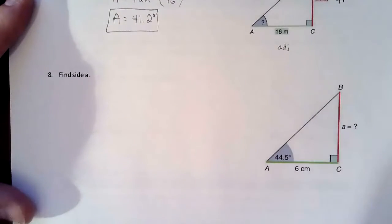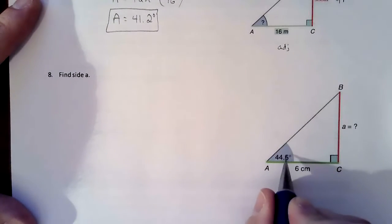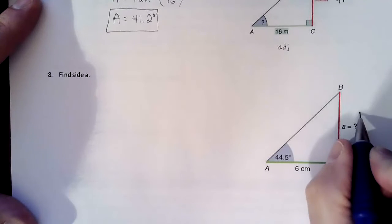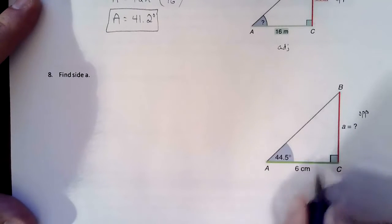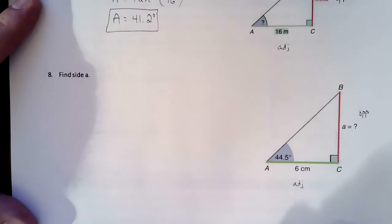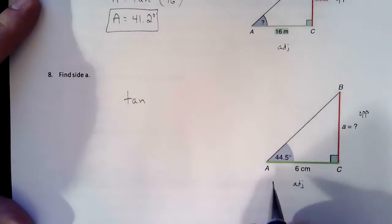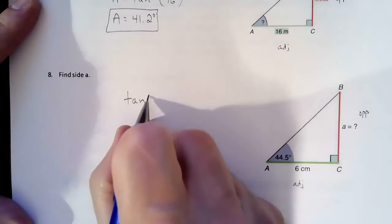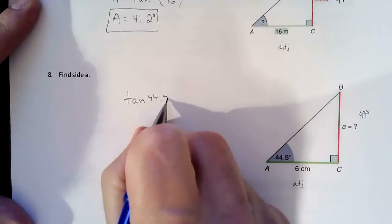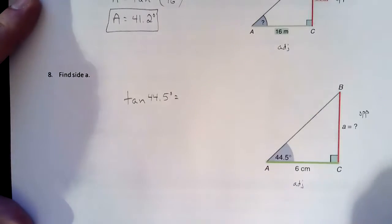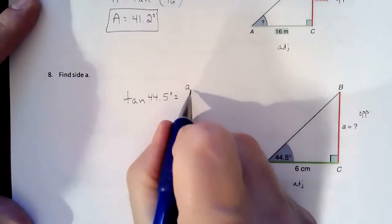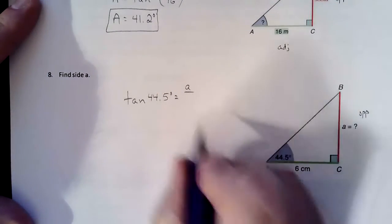So we go down to the next picture. Same kind of a look, same kind of a feel. Here's our angle. Here's the side across from it, which is opposite. And this side is adjacent because it's next to it. So those are the two pieces of information you're either looking for or have. And that's telling us we should be setting up our equation as a tangent. So tangent of our angle, which is 44.5 degrees, is going to equal our opposite, which we don't know, over our adjacent, which is 6.